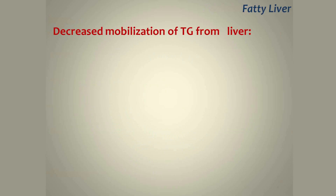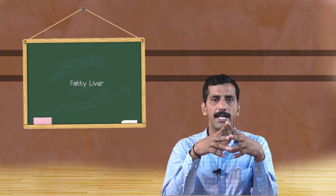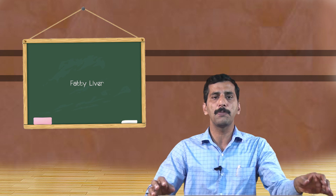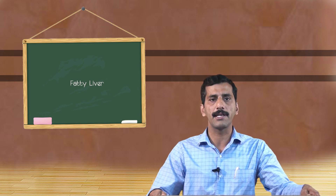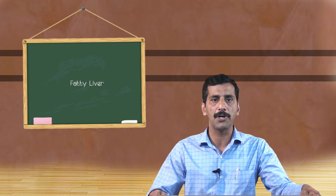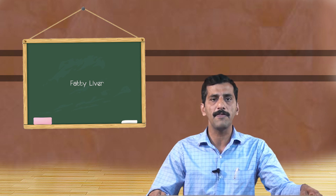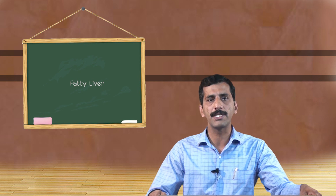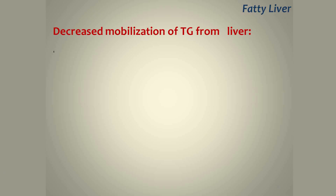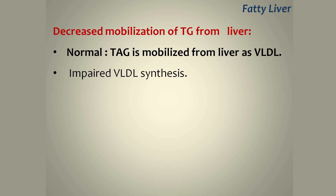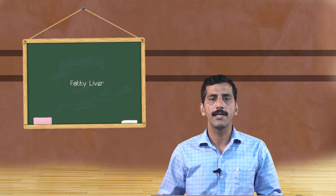In the second type of fatty liver, decreased mobilization of fat from the liver takes place. As explained earlier, VLDL is required for the transport of fat from the liver. In Type 2 fatty liver, there is decreased production of VLDL because of various reasons. The major reason is decreased synthesis of apoprotein B100, which is required for the synthesis of VLDL. This decreased production of VLDL leads to an inability of the liver to transport fat that is normally produced within it, so accumulation of fat takes place in the liver, causing fatty liver.